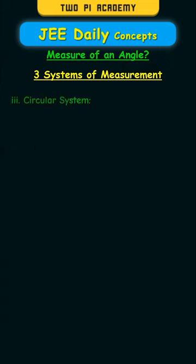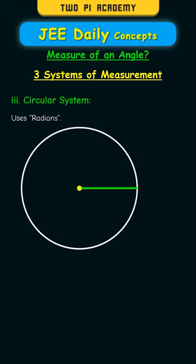And finally we have the circular system which uses radians. If you project the radius of a circle onto the circumference, then the angle covered by that arc is given by one radian. And a complete circle consists of 2 pi radians.